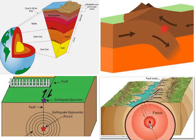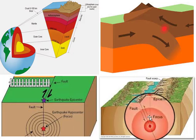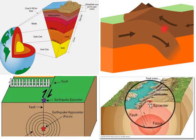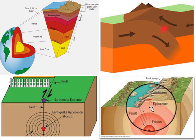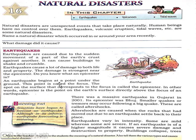Here in this picture, you can see this is the focus, and the point directly above this focus on the earth's surface is known as the epicenter of this earthquake. So, the epicenter is the place where most of the damage takes place. An earthquake begins at a point under the ground called the focus, and the spot on the surface that corresponds to — meaning directly above — the focus is called the epicenter.